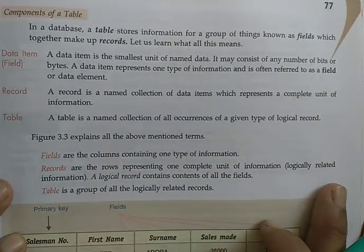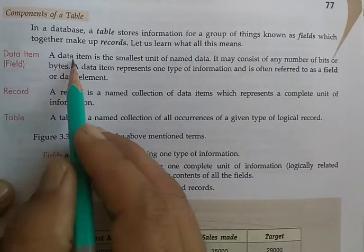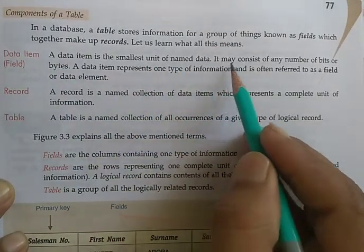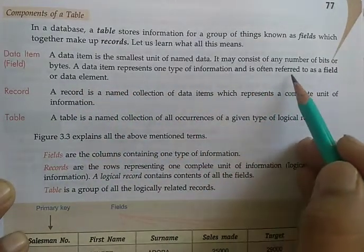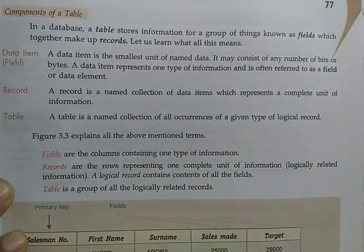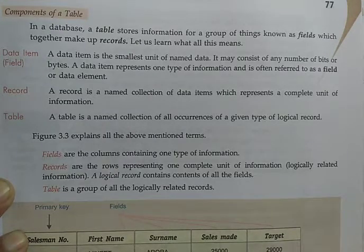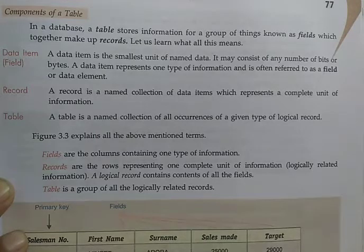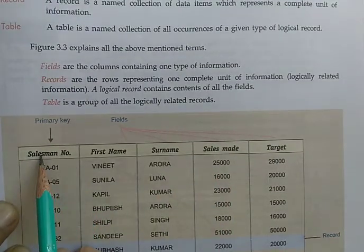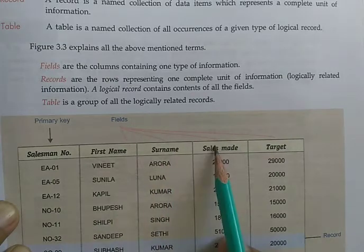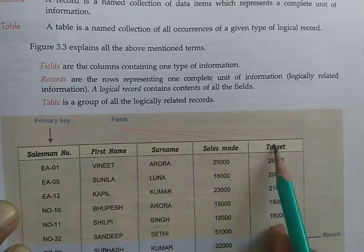There are some components of tables. The first one is a data item. A data item is the smallest unit of data — it may consist of any number of bits or bytes. A data item represents one type of information and is often referred to as a field. Looking at this table, the fields are: Sales Number, First Name, Surname, Sales Made, and Target. These are the fields of the table.